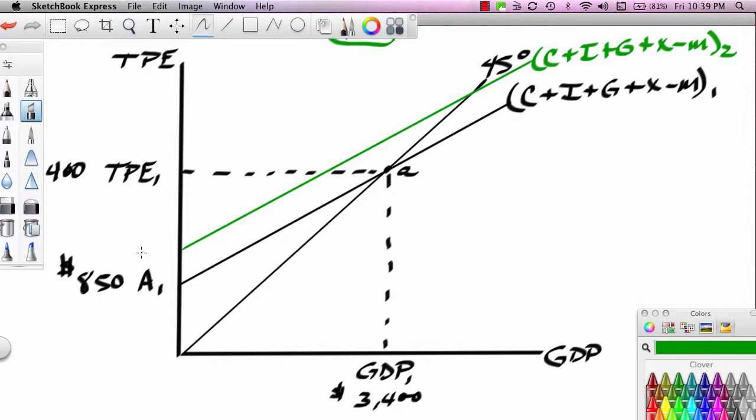And we're going to label this new line C plus I plus G plus X minus M2. Now, this is going to be A2 down here, and let's say that this is movement up to 900. So a modest but significant increase in A. Remember that we're talking about a parallel shift. So what is going on at point B?